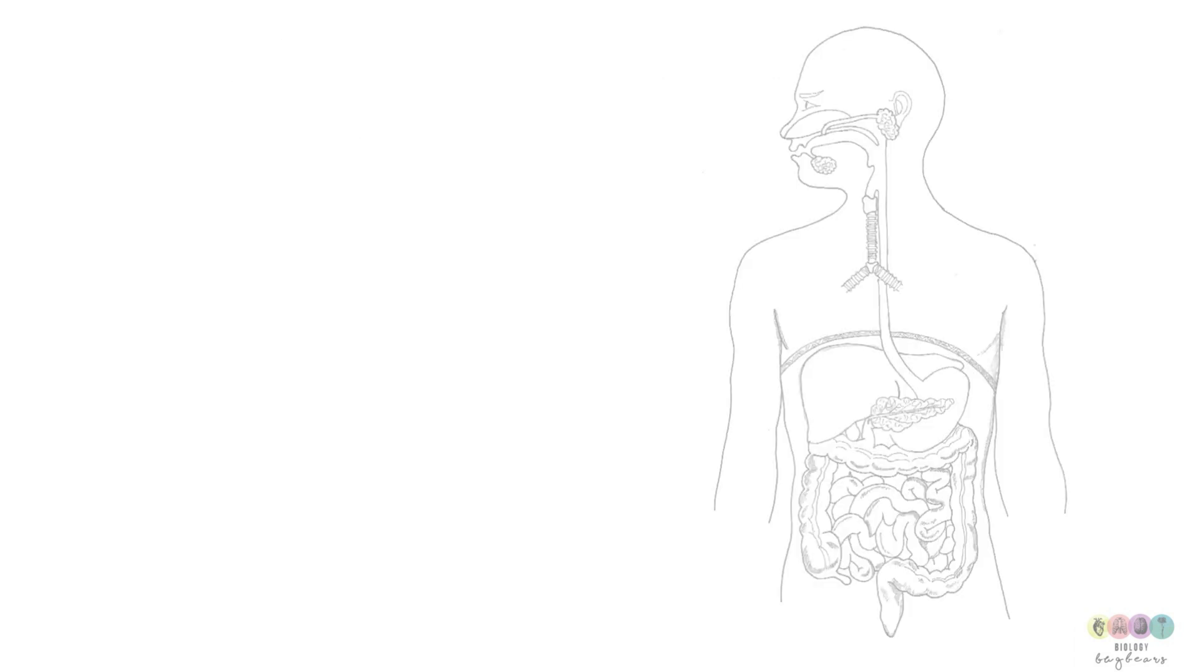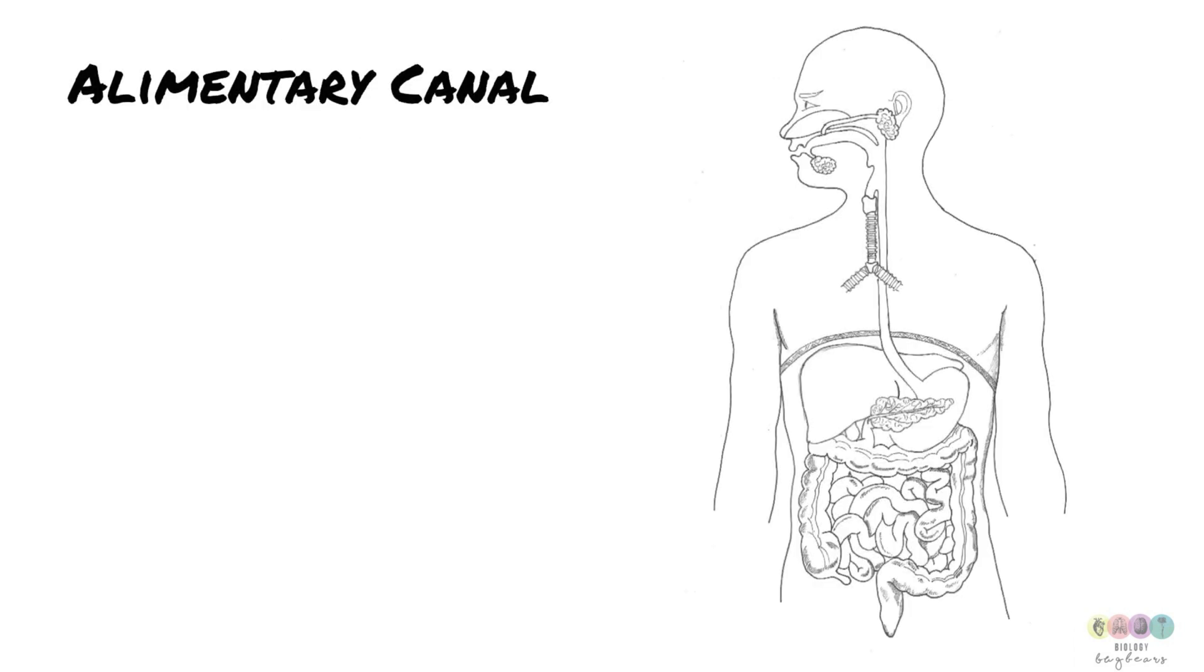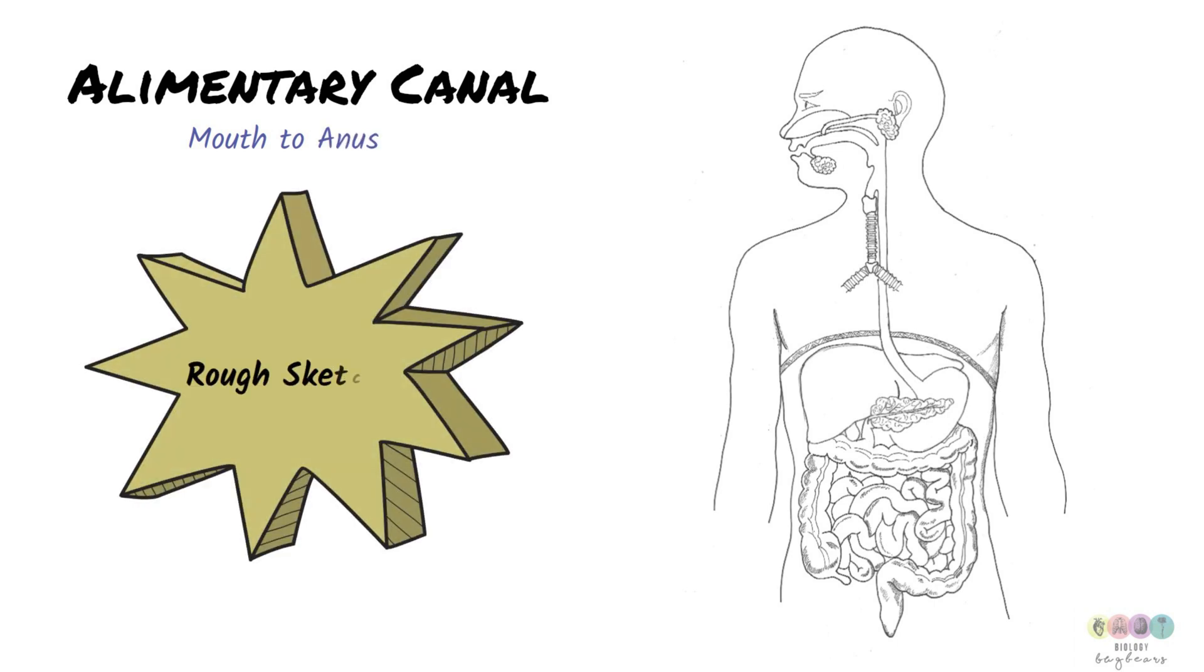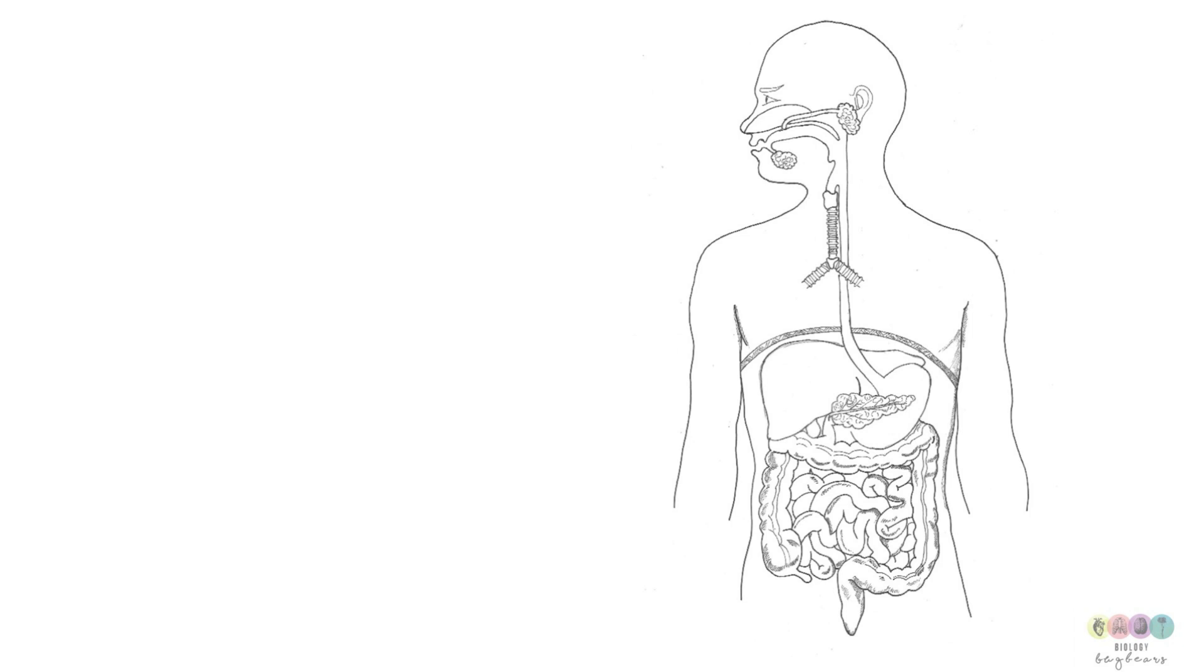Each of those four processes take place somewhere within the alimentary canal. This is another name for the digestive system. And it's literally a tube that begins with the mouth and ends with the anus. This diagram here is a really rough sketch. Just bear that in mind. It's not absolutely perfect. But you should be able to draw a very simplistic diagram yourself.